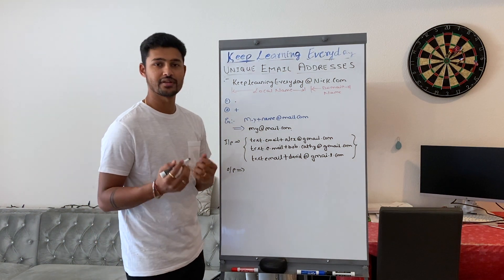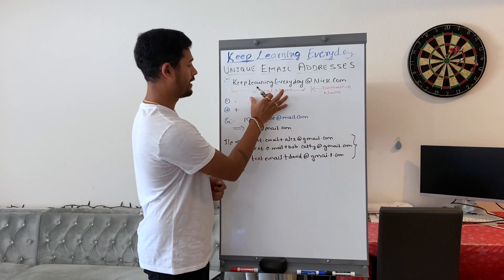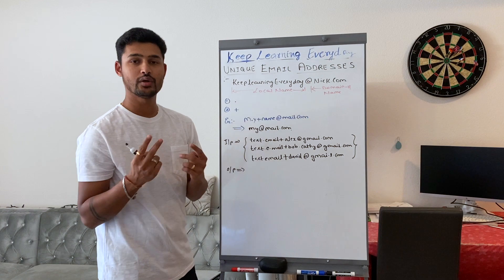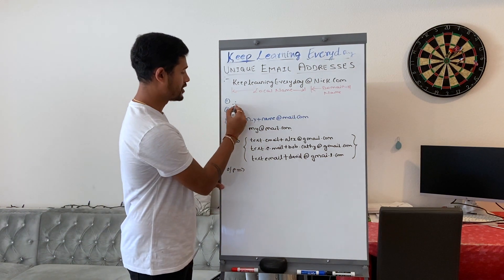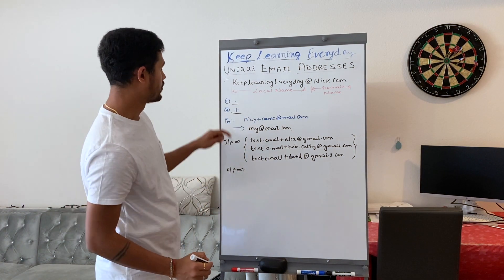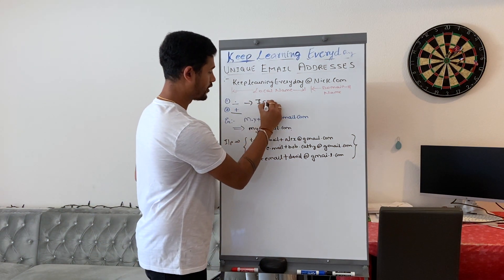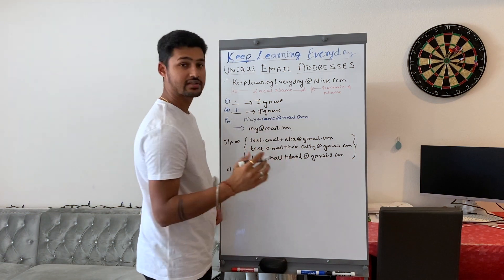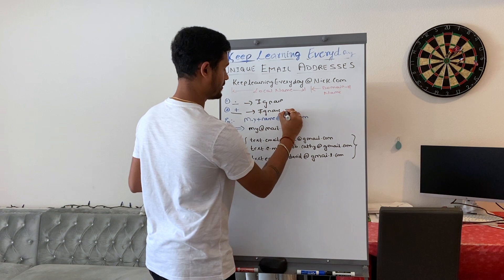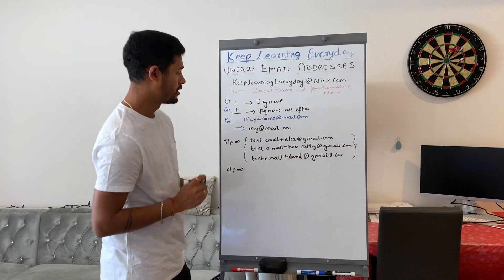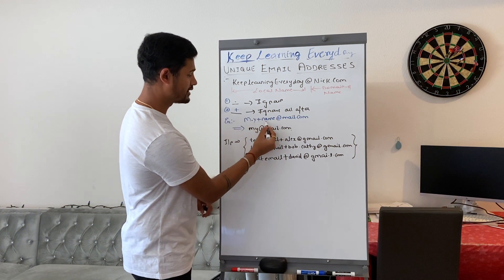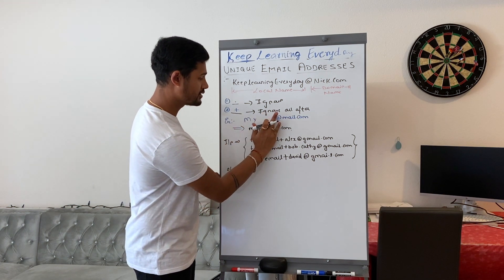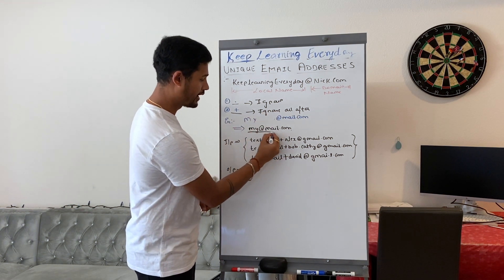The problem statement is something like this. You have been given an email which will have a local name and a domain name. The local name can contain two invalid characters: a dot and a plus sign. If you have a dot, you have to ignore that particular dot. If you have a plus, you need to ignore all the characters coming after that. For example, m.y+name@mail.com becomes my@mail.com.